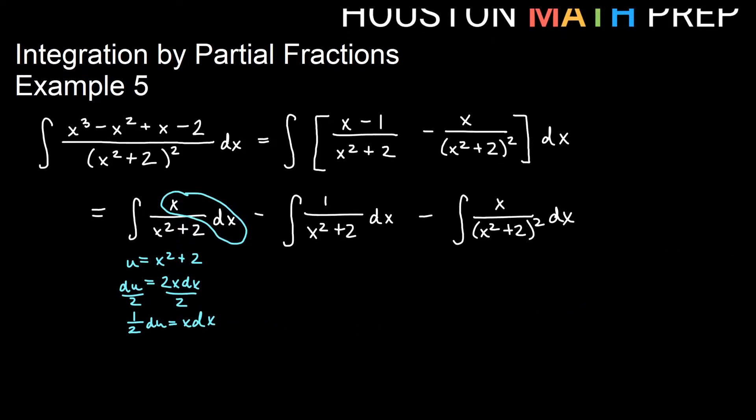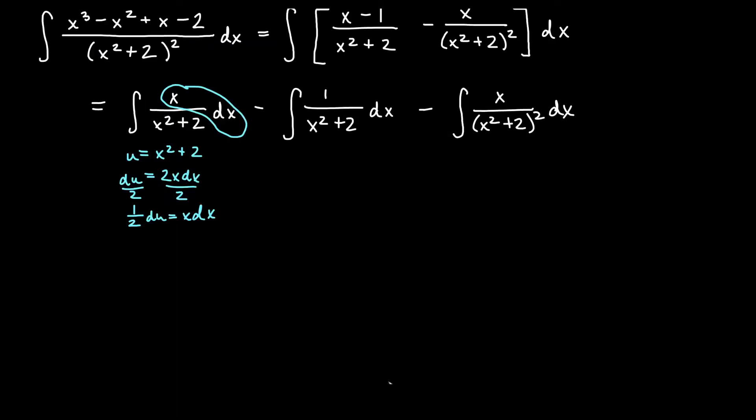So let's do that first one. That will give me 1/2 integral of du/u, and that will give us 1/2 ln|u| and my u in this one was x² + 2. We'll leave it like that for now and come back to it in a bit.